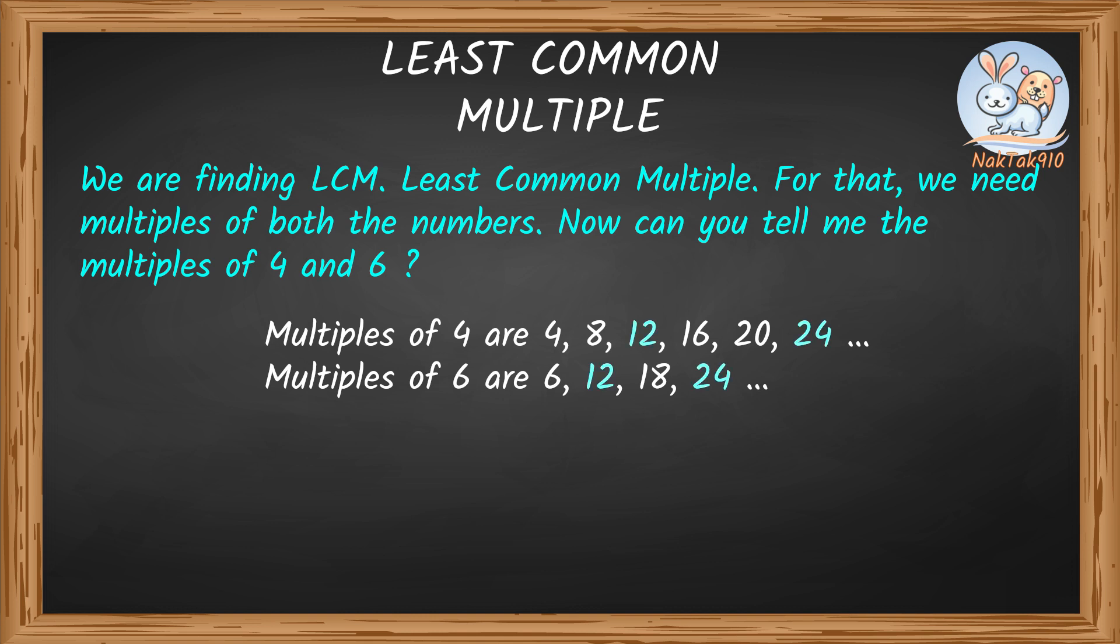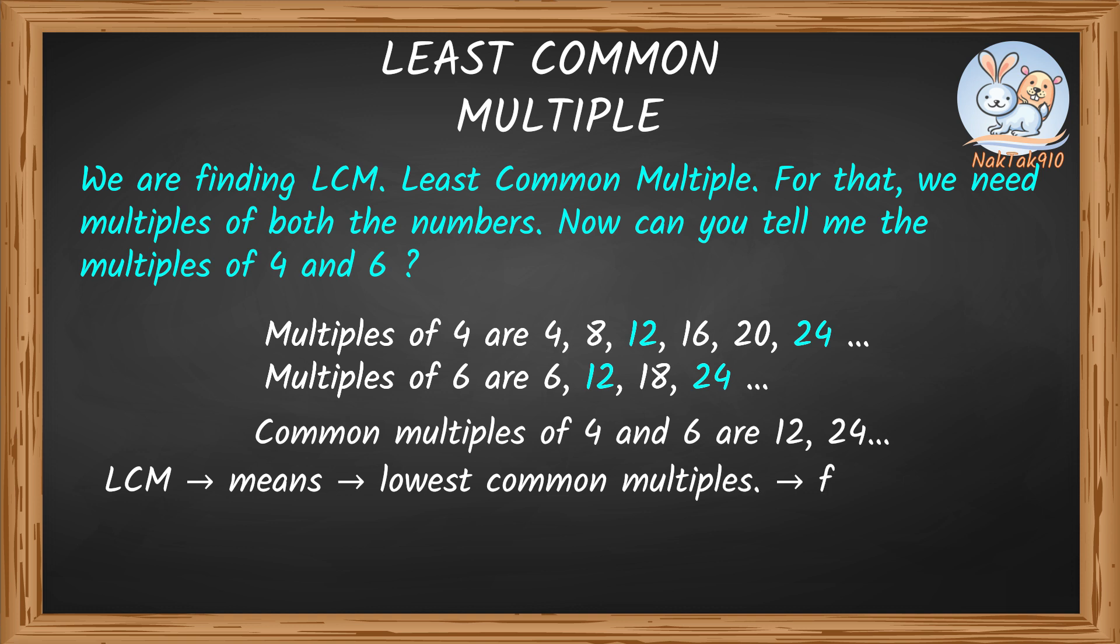Look for the common multiples in the list. So far from what we listed, 12 and 24 are in common. So the common multiples of 4 and 6 are 12 and 24, and there's still a lot more. LCM itself means it's the lowest or the least common multiples, so it's the first common multiple of the list.